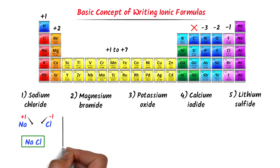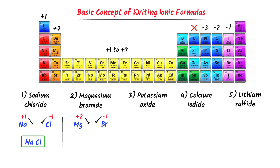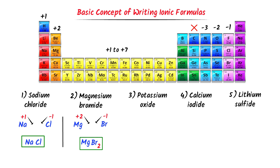Secondly, magnesium is present in group 2 and its oxidation state is positive 2. Bromine is present in group 7 elements and its oxidation state is negative 1. I cross their respective charges and I get MgBr₂. So the chemical formula of magnesium bromide is MgBr₂.